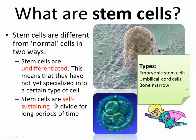Bone marrow also contains stem cells. The bone marrow contains blood stem cells which can differentiate and turn into many different types of blood cells, including various white blood cells and red blood cells.